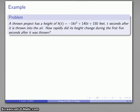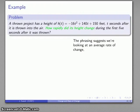We have an object thrown into the air, and its height is given by h(t) = -16t² + 140t + 150 feet, t seconds after it's thrown into the air. How rapidly did the height change during the first five seconds after it was thrown? There's nothing in here that says find the average rate of change. We have to infer from the phrasing.